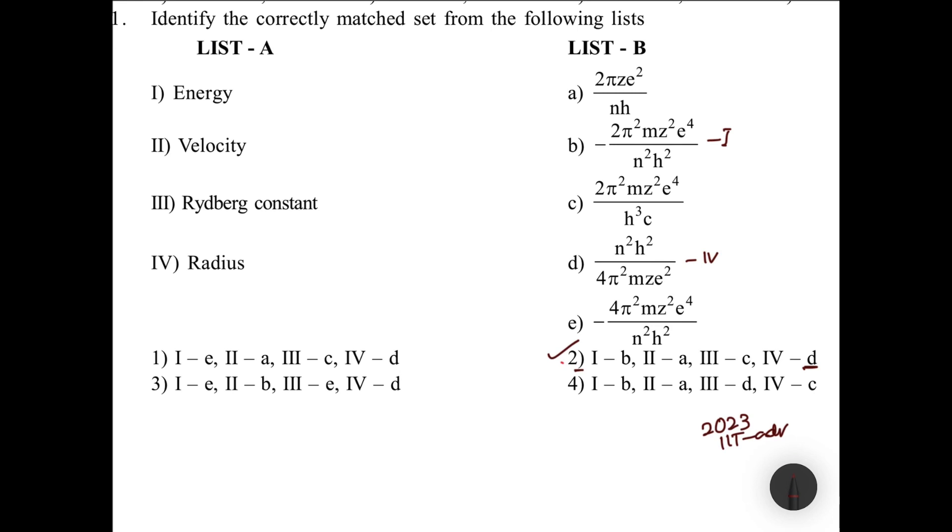If you want to cross-check: 2π²mz²e⁴/ch³ is the Rydberg constant, so this is III. Velocity is 2πze²/nh. This is velocity, very easy question.